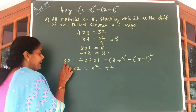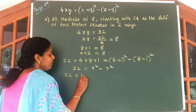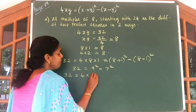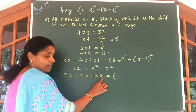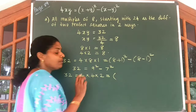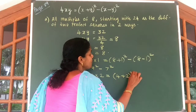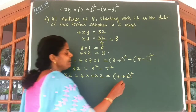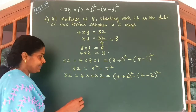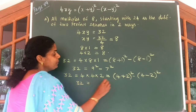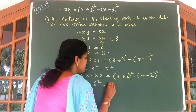Use the next idea. Again, we can write 32 as 4 into 4 into 2, that is equal to 4xy where x is 4 and y is 2. So we get 4 plus 2 whole square minus 4 minus 2 whole square, giving us 32 is equal to 6 square minus 2 square.